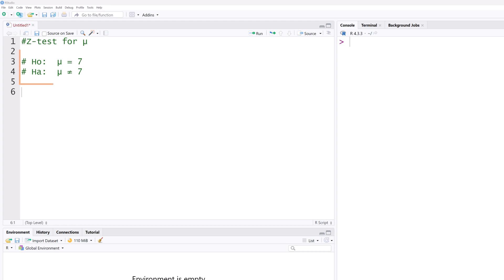Let's first consider the two-tailed test. The null hypothesis states that the population mean is equal to 7 while the alternative hypothesis states that the mean is not equal to 7. It is two-tailed because not equal to 7 could mean greater than 7 or less than 7. Note that I've moved my console from the bottom left to the top right here.